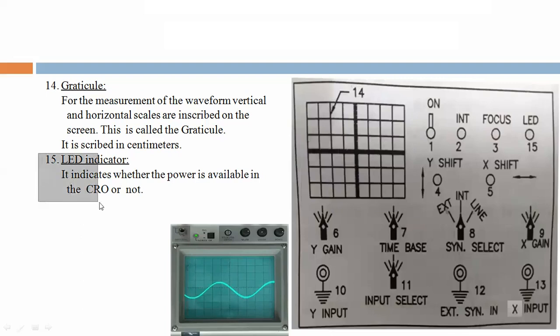Fifteen, LED indicator. So it indicates whether the power is available in the CRO or not. This is the indicator, LED indicator, 15 number.